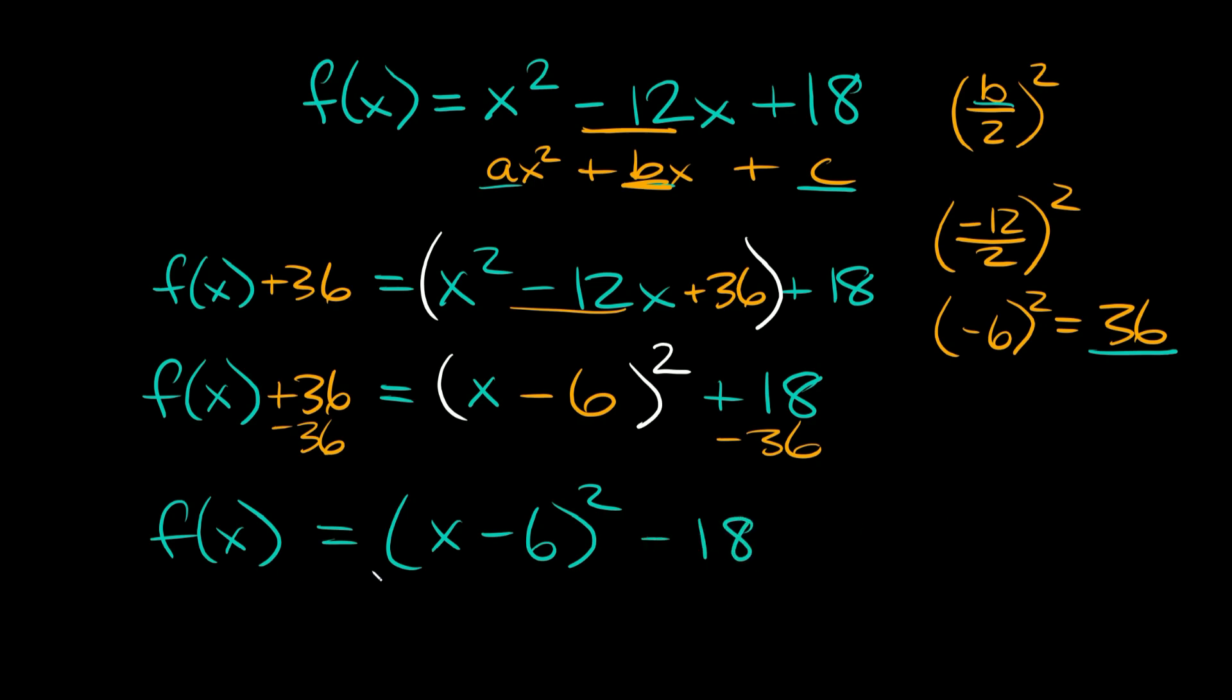Now you can see that our function is finally in vertex form. If you don't remember, vertex form is f(x) = (x - h)² ± k, where h and k are your x and y coordinates of your vertex.